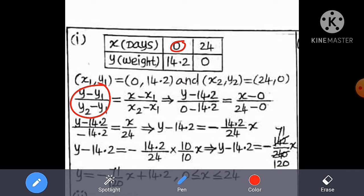y minus y1 by y2 minus y1 equal to x minus x1 by x2 minus x1. That will substitute. y minus 14.2 by 0 minus 14.2 equal to x minus 0 by 24 minus 0. y minus 14.2 by negative 14.2 equal to x by 24.